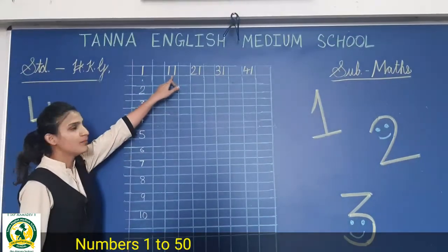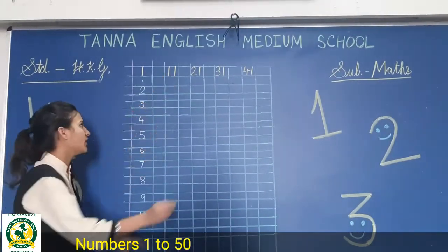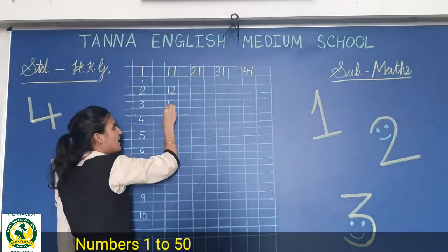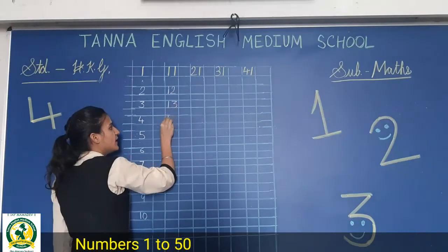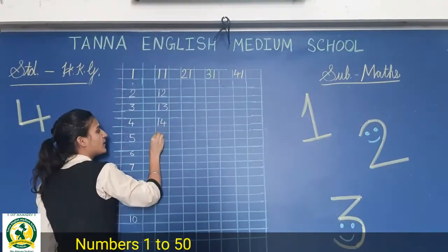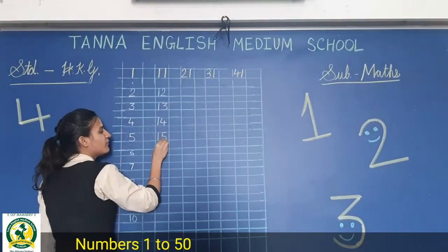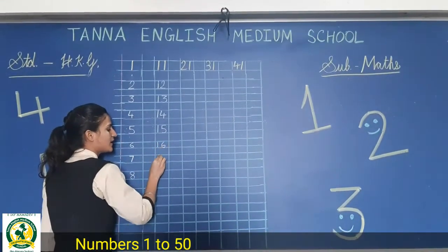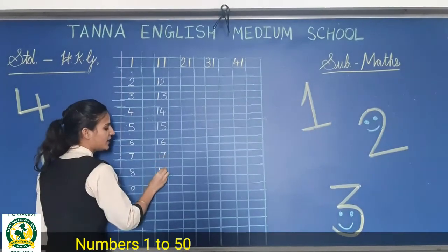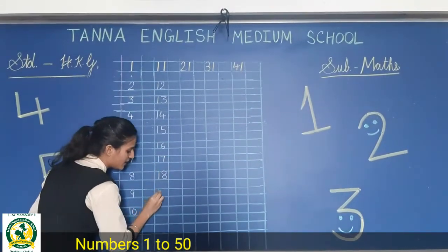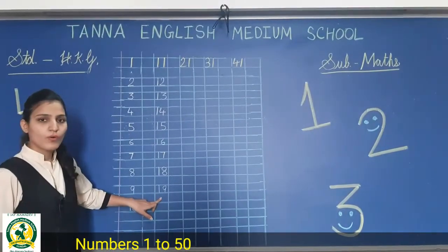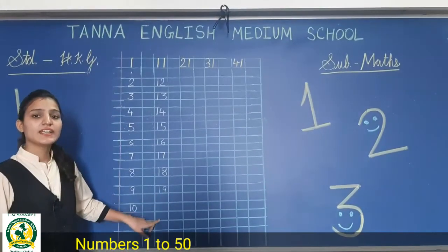So after 10, what will come? 11. 11 is already written. And after 11 students, 12, 13, 14, 15. After 15, what will come? 16, 17, 18, 19. So what comes after 19? 20.